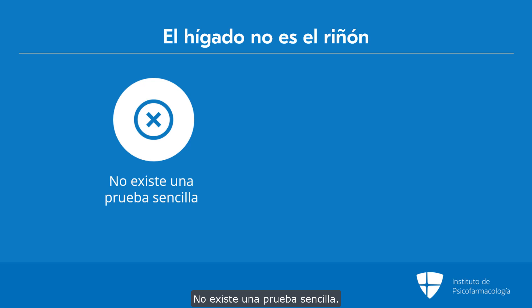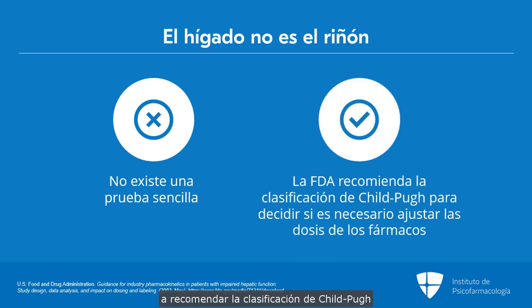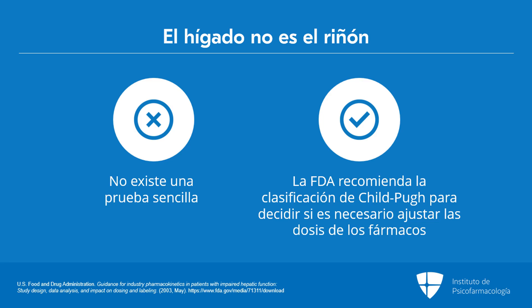There is no one simple test. As I've mentioned, the AST and ALT are actually the wrong tests in this context. So how did the FDA end up recommending Child-Pugh as the best way to decide if drug doses needed to be altered for new medication starts?